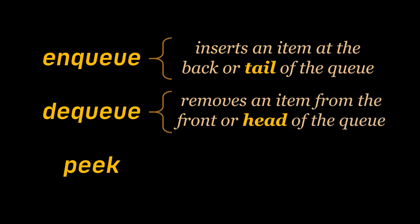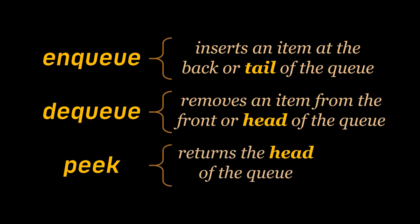The enqueue operation adds an item to the back of the queue, which we call the tail. The dequeue operation removes an item from the front of the queue, which we call the head. The peek operation returns the head of the queue — because if you are the one serving people in line, all you have access to is the first person standing in front of you. Only when that person's request is done does the next one approach.